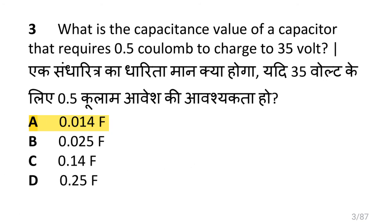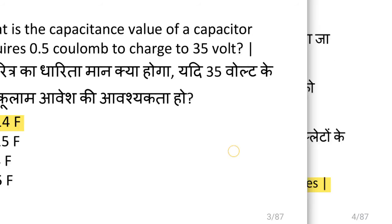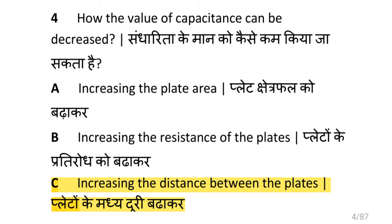What is the capacitance value of a capacitor that requires 0.5 Coulombs to charge to 35 Volts? Using the formula C = Q/V, we get the answer 0.01514 Farad. How can the value of capacitance be decreased? By increasing the plate area, increasing the resistance of the plate, or increasing the distance between the plates.